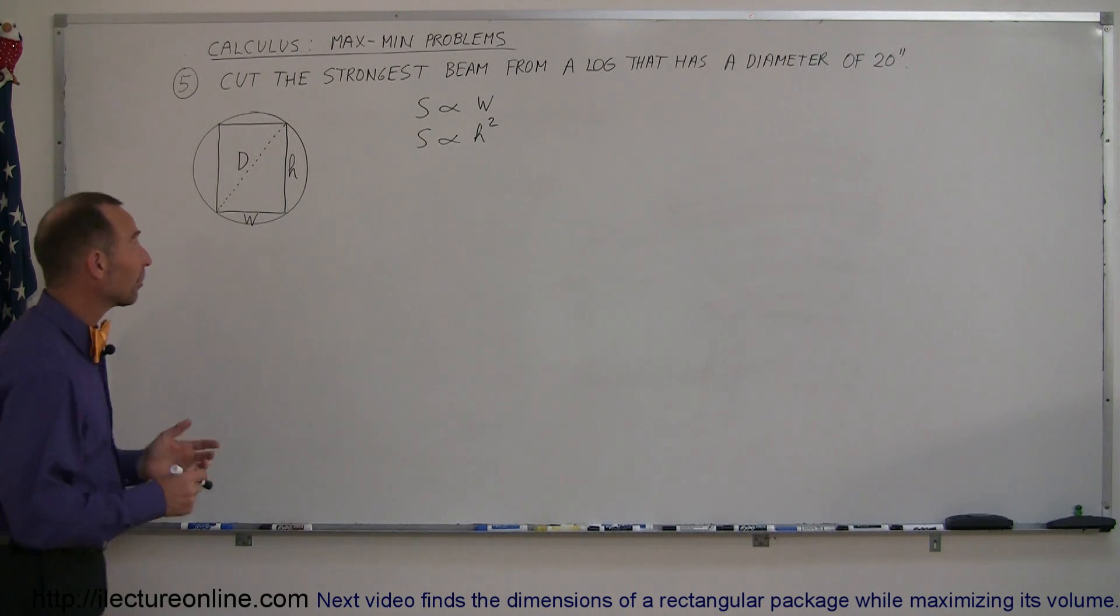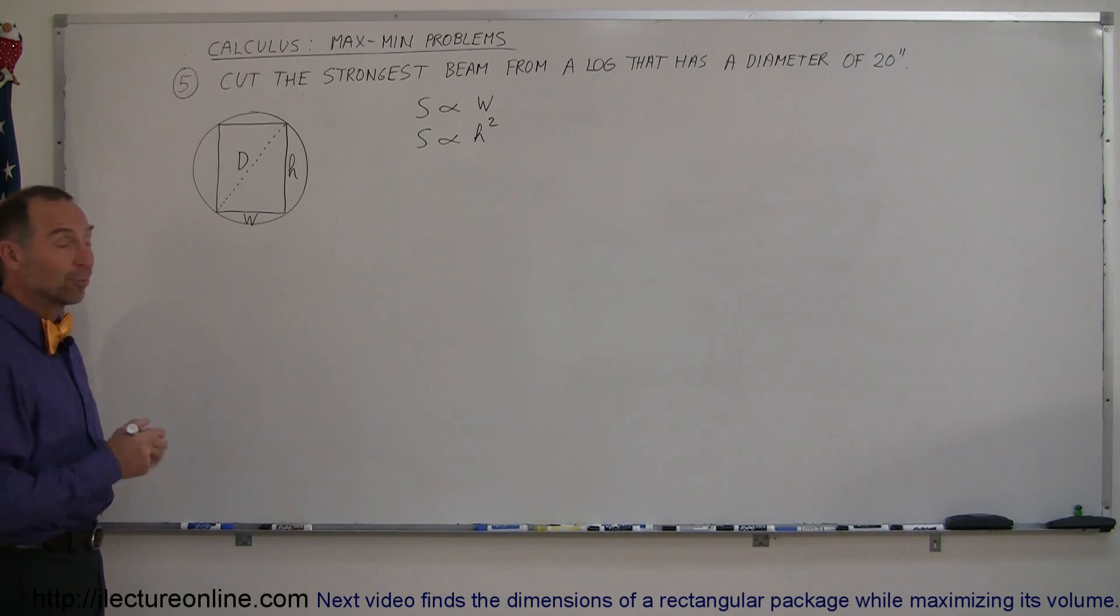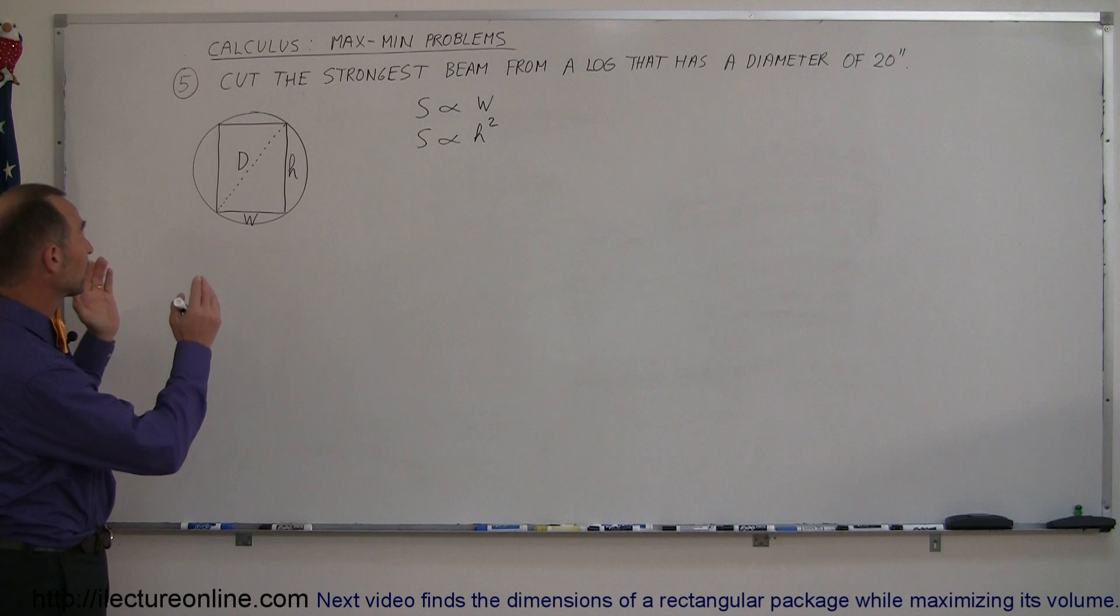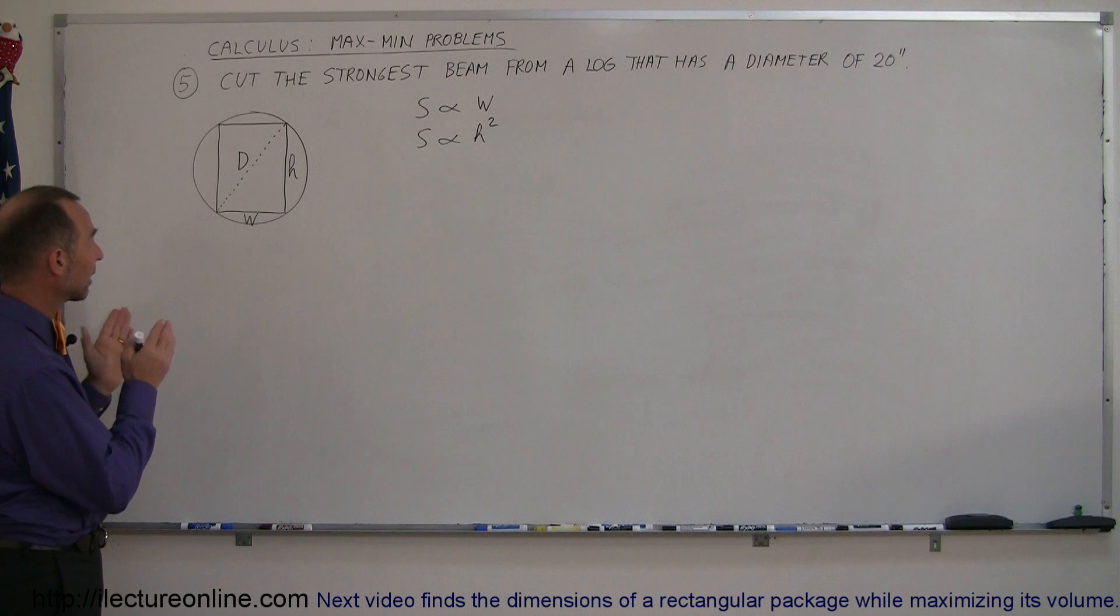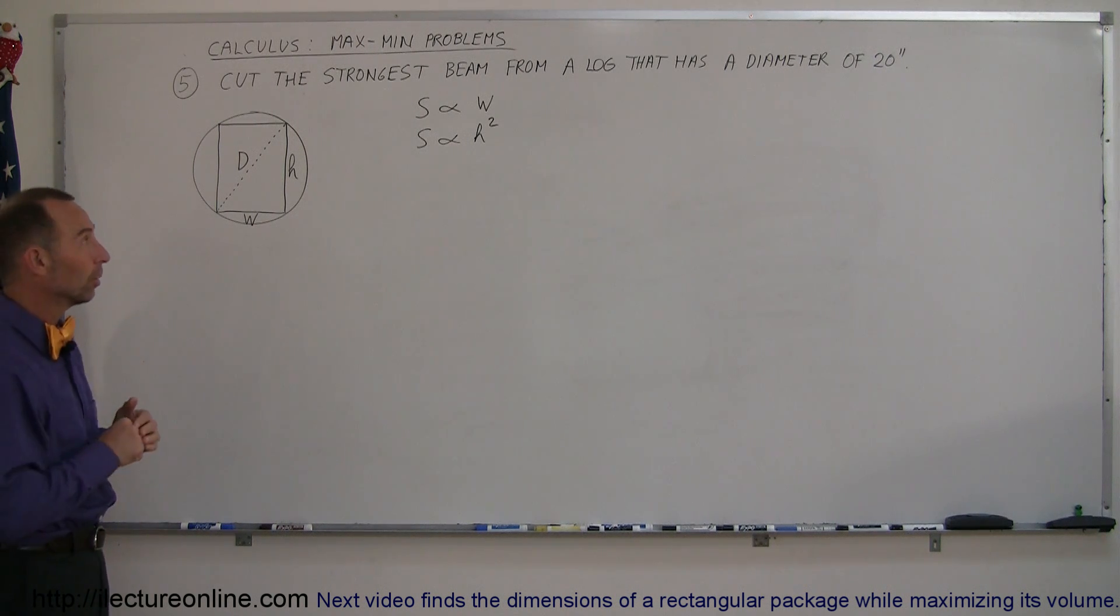Welcome to iLecture Online and here's example number five on how to do max-min problems using our calculus method. And this is actually a very interesting problem. Let's assume that you cut a log from a tree that is 20 inches in diameter and you're supposed to then take that log and cut it down to a beam that is the strongest beam possible.